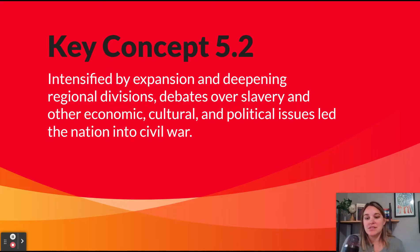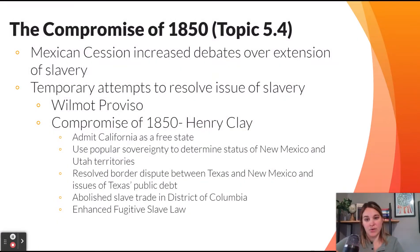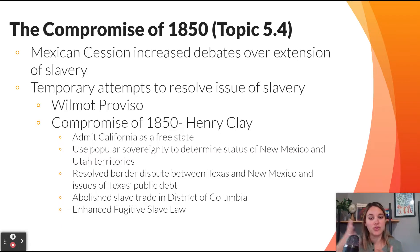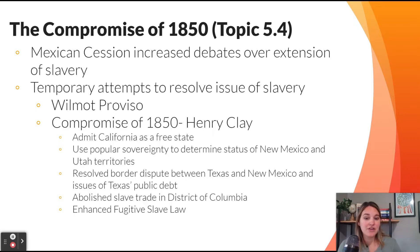Moving on to Key Concept 5.2: intensified by expansion and deepening regional divisions, debates over slavery and other economic, cultural, and political issues led the nation into civil war. We start with the Compromise of 1850, another attempt to resolve the issue of slavery after the Mexican-American War. Henry Clay proposed admitting California as a free state, creating a stricter Fugitive Slave Law, and using popular sovereignty in New Mexico and the Utah Territory. Those are the three big components, but unlike the Missouri Compromise, this one will not resolve tensions for very long.